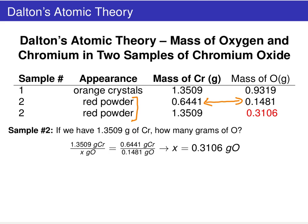So this chemical compound — sample two, the red powder — must always have the same ratio of chromium to oxygen. If we set up that ratio: grams of chromium over grams of oxygen, this ratio must always be constant.